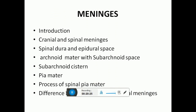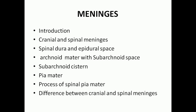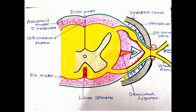So far we have discussed the introduction, then cranial and spinal meninges, spinal dura and epidural space, arachnoid mater and subarachnoid space, pia mater and processes of spinal pia mater. Our next point is the difference between cranial and spinal meninges.